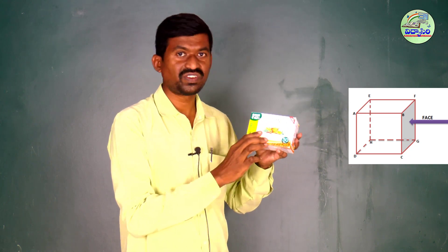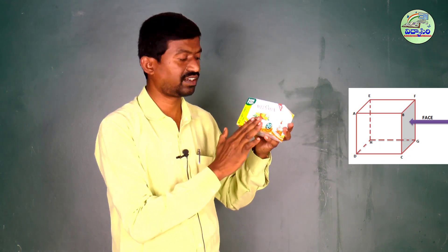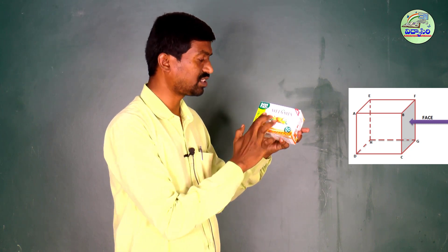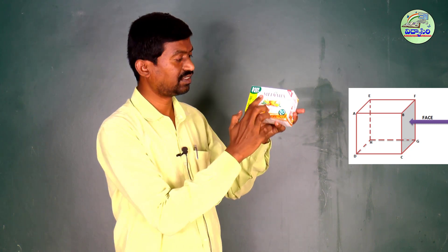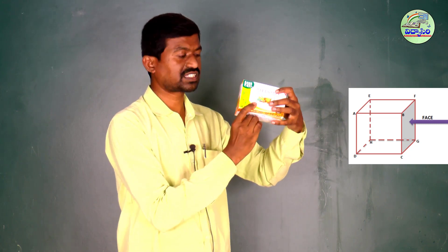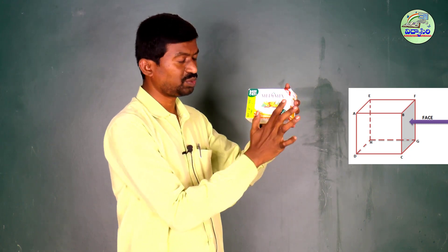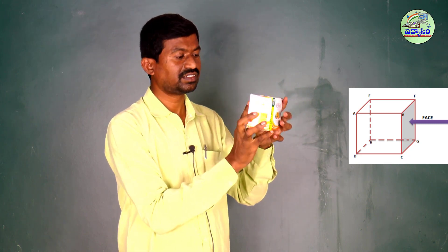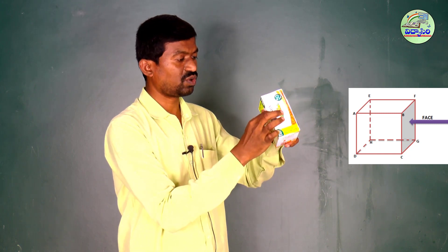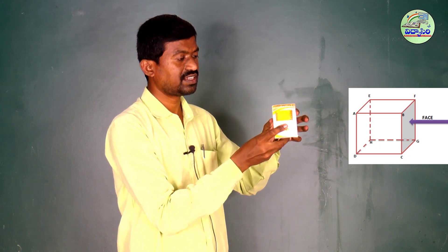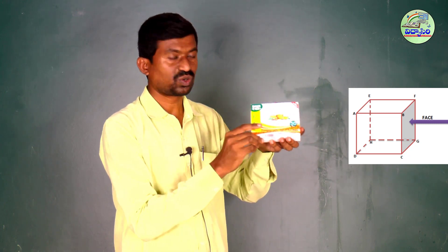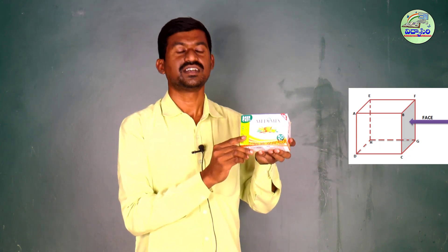How many faces are there? Let us count how many faces there are. See: 1, backside 2, and sides 3, 4, 5, 6. Total how many faces? 6.